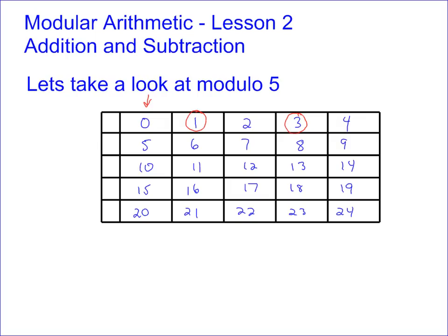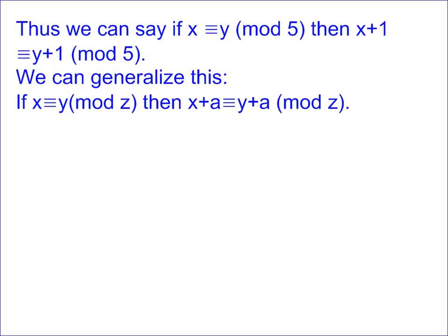So that leaves us with a theorem. We can say that if x is equivalent to y mod five, then x plus one is equivalent to y plus one mod five. More generally, if x is congruent to y mod seven, then x plus a is congruent to y plus a mod seven.